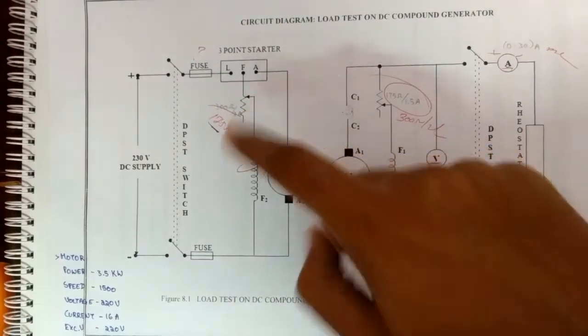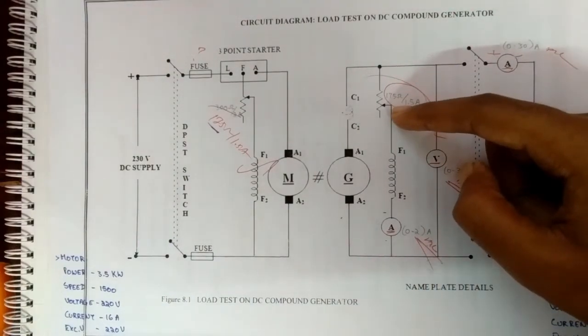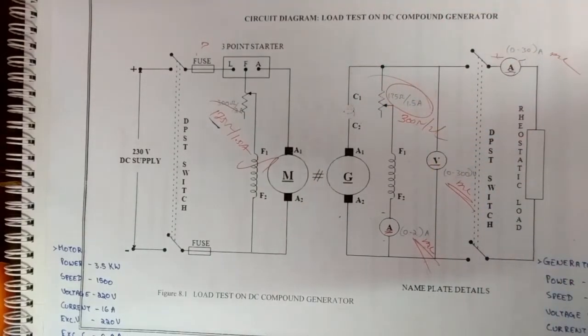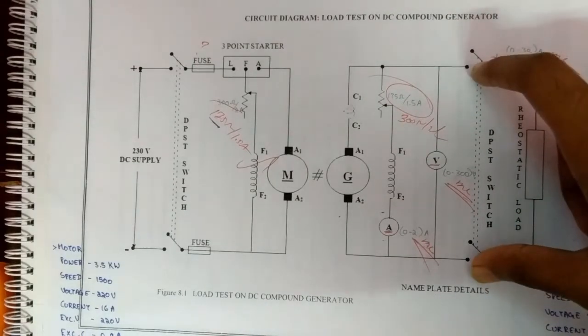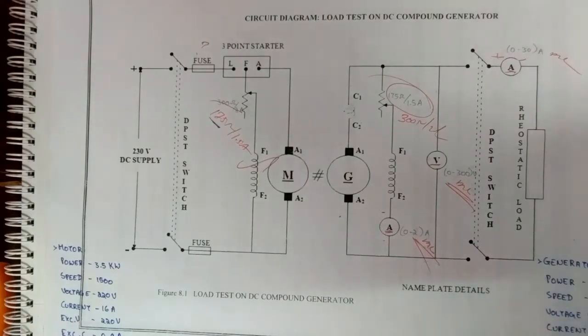The field rheostat of the generator is adjusted to get the rated voltage in that voltmeter. The DPSC switch 2 is closed, then the rheostatic load is applied. The same procedure is repeated until the rated current is obtained.